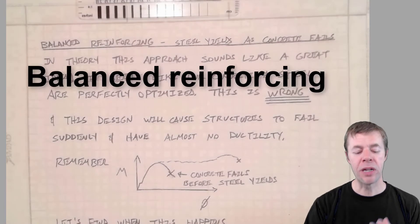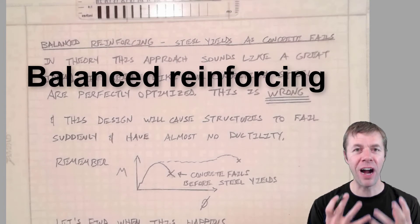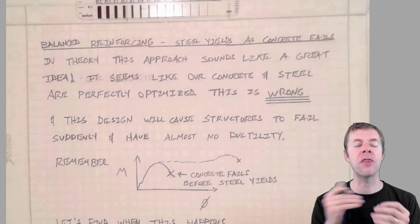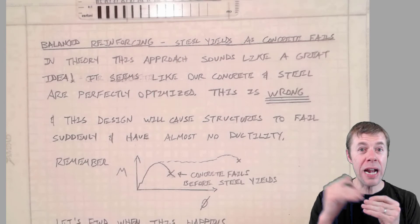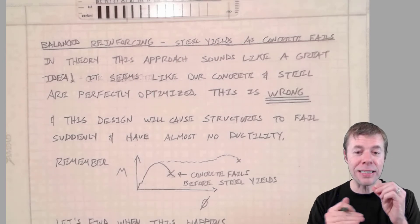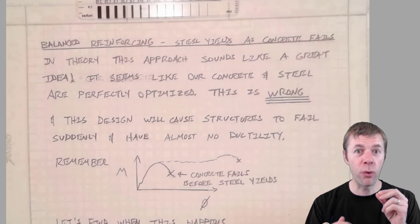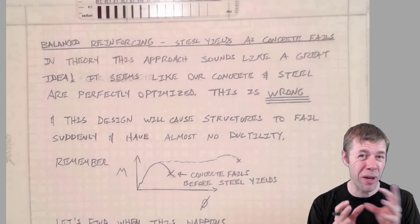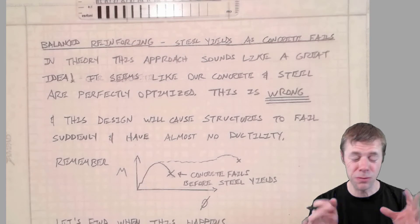So let's talk about balance reinforcement. And let's talk about how to find it. Because if you can find the balance reinforcement then any more steel than that is over-reinforced. And that's bad. And any less steel than that is under-reinforced. And that's good. But we'll talk about it. You don't want to be right on the edge. That's coming up.